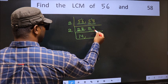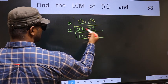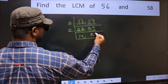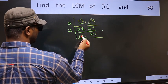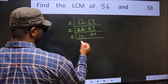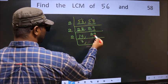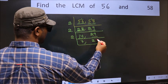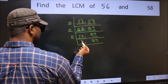Now the other number is 29. Last digit is 9, which is not even, so this is not divisible by 2. So we write it down as it is. Now here we have 14. 14 is 2 7's, which is 14. The other number 29 is not divisible by 2, so we write it down as it is.